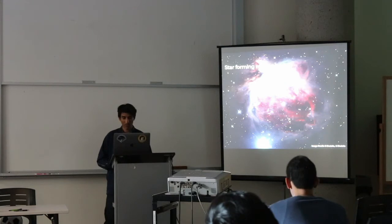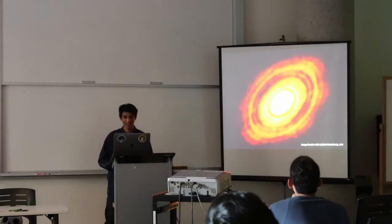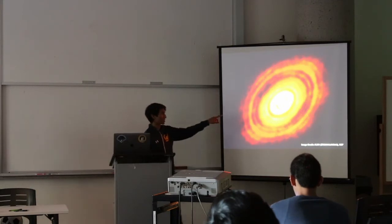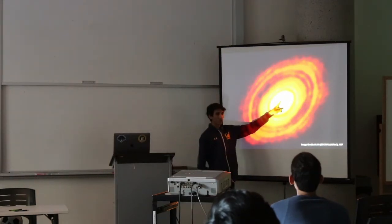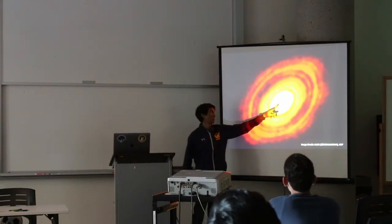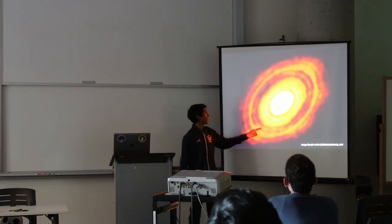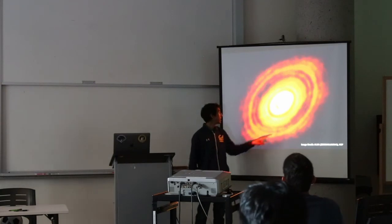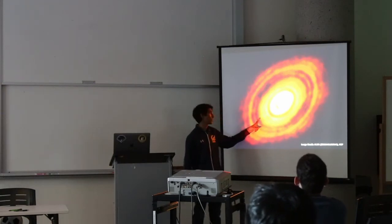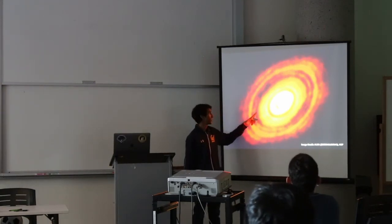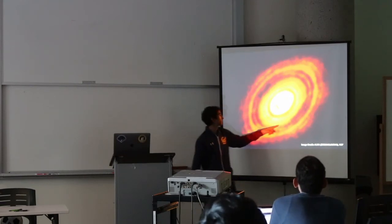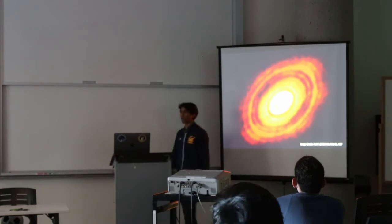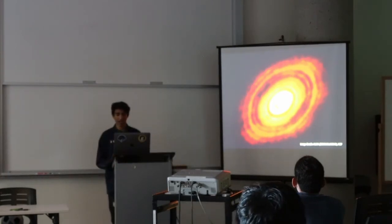This is an example of a protostellar disk — you have your protostar, meaning pre-star, at the center, with gas spinning and orbiting around it. This is an actual image taken by the ALMA radio telescope. The gaps in the rings of the disk, we think, are due to planets that are carving out those gaps.